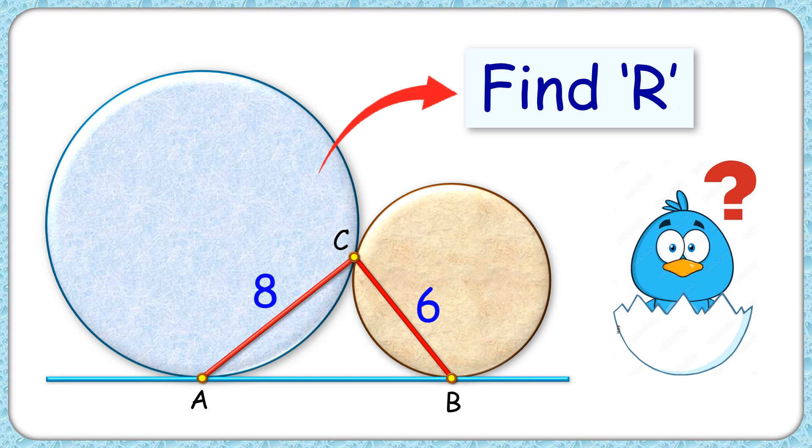Welcome to this interesting question. We have two circles which are lying on a straight line and touching it at point A and B. The circles are touching each other at point C. The length of line segment AC is 8 cm and BC is 6 cm.